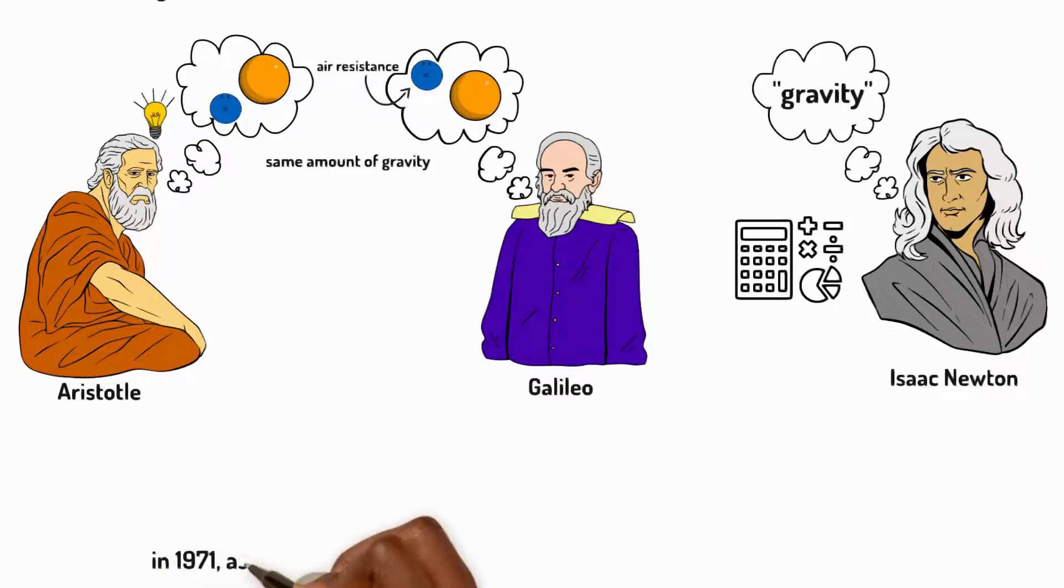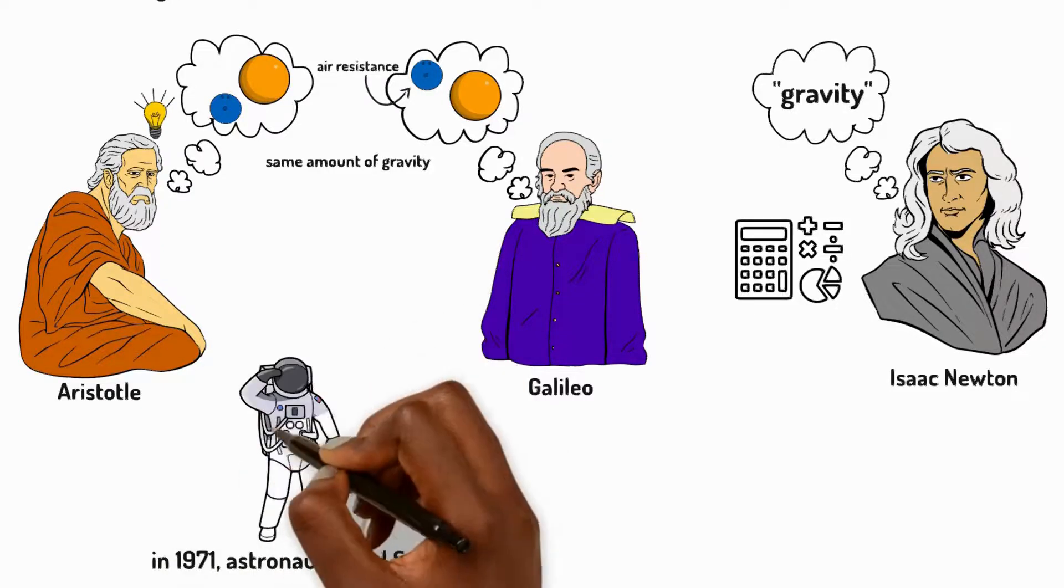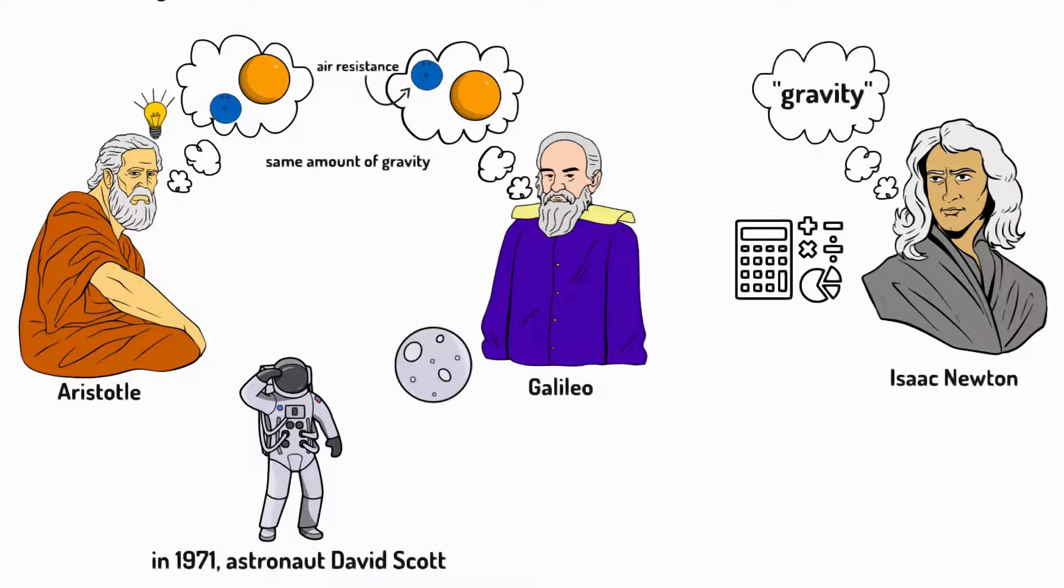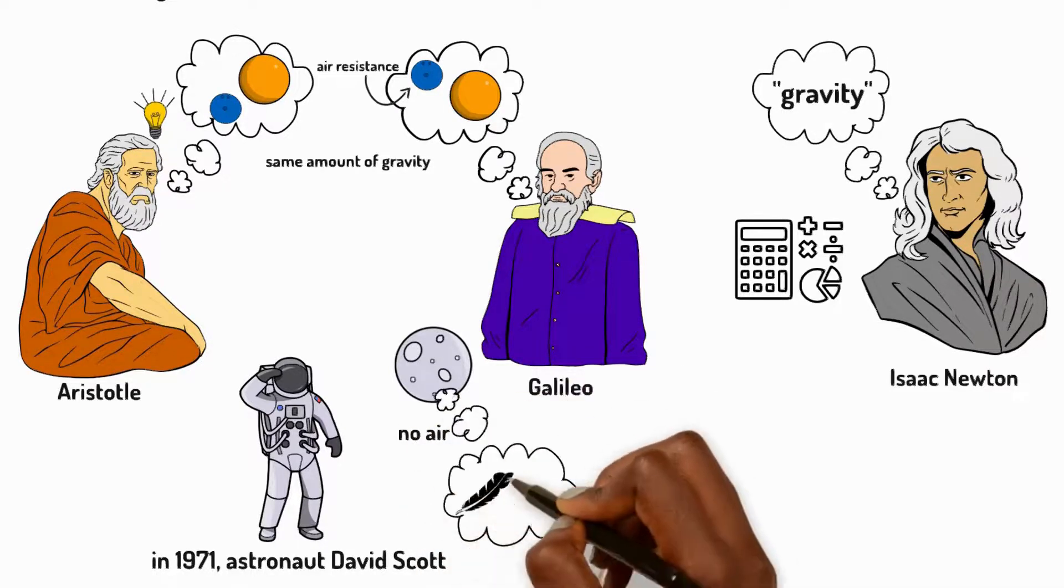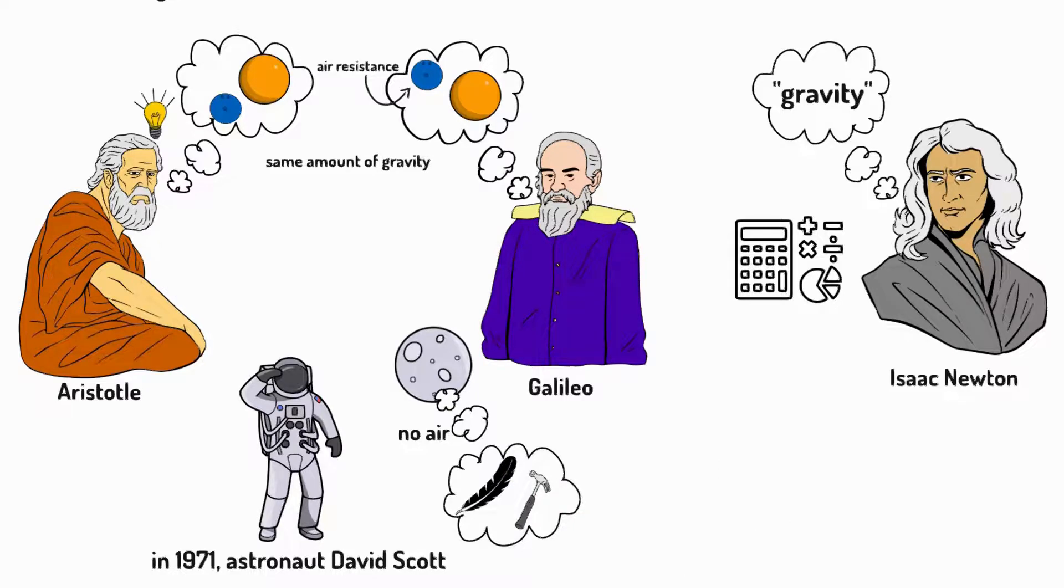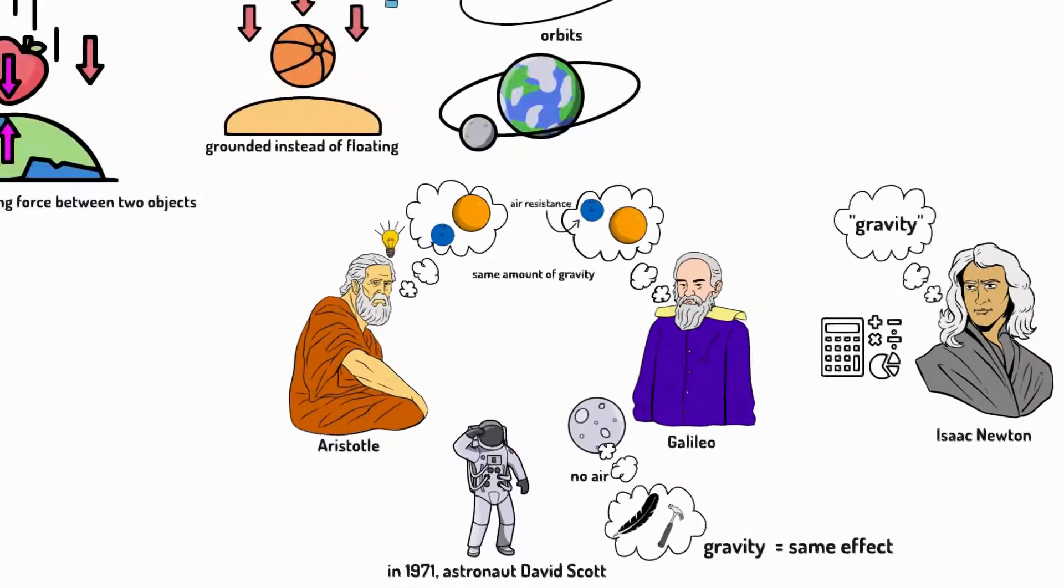In 1971, astronaut David Scott proved Galileo's earlier theory. The moon has no air, so no air resistance. And when he dropped a feather and a hammer, they both fell at the same speed. This proved that gravity affected heavy and light objects the same.